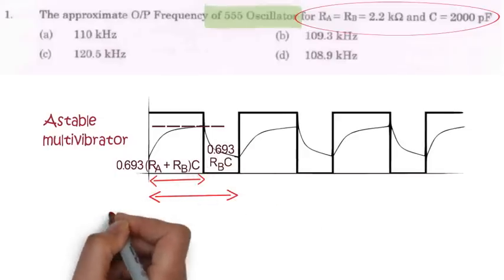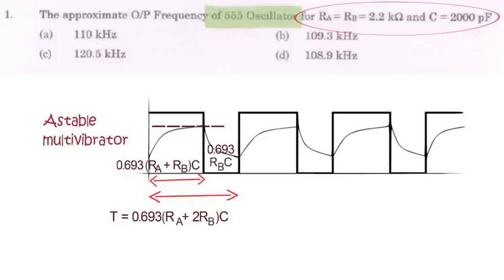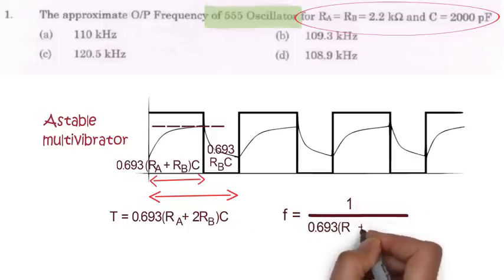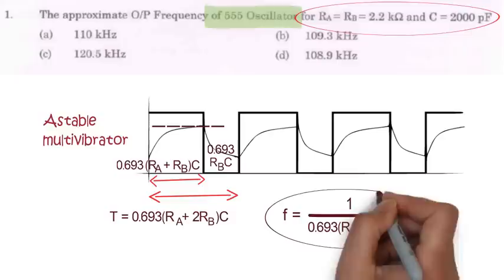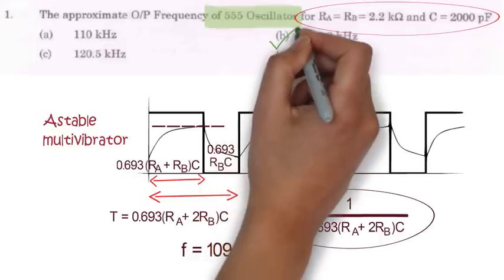So here time period of the waveform will be 0.693 into Ra plus 2Rb into C. And as we know the frequency is the inverse of time period. So output frequency will become 1 divided by 0.693 into Ra plus 2Rb into C. When we put all the values, you will get F equal to 109.3 kHz. So option B is the correct answer.